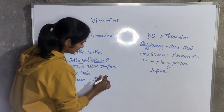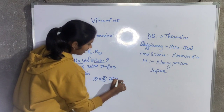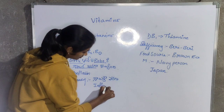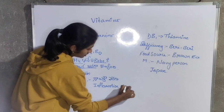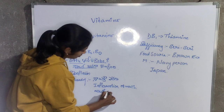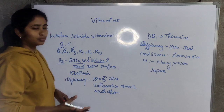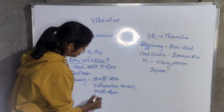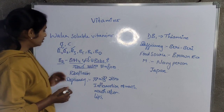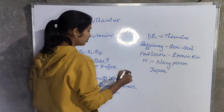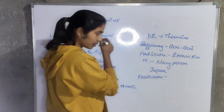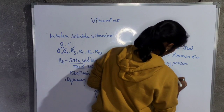The scientific name of B2 is riboflavin. The main deficiency disease caused by B2 deficiency is inflammation of the mouth — mouth ulcers and inflammation of the lips. It is very important to know this. That is because of deficiency of B2. The food sources for B2 vitamin are grain products and milk products.